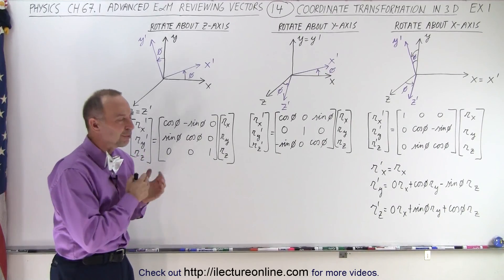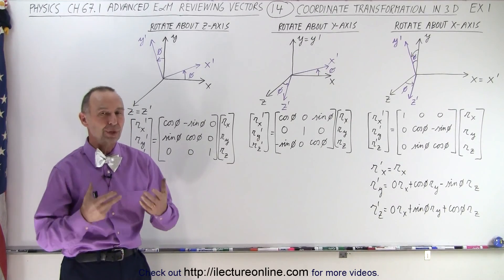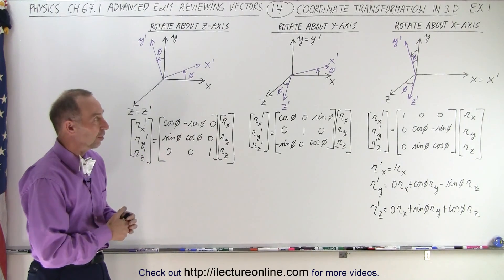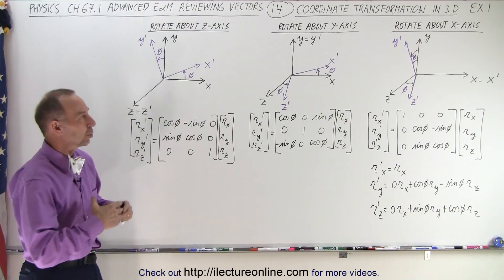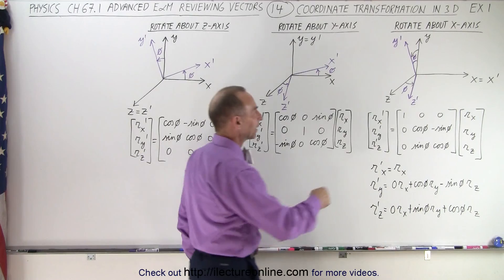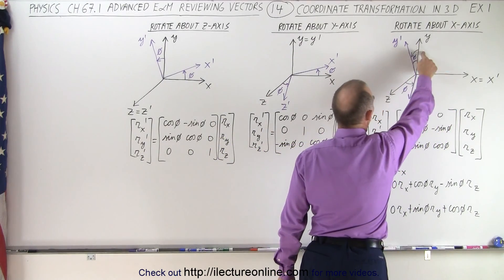Welcome to Electronline. Here before us we have examples of three transformations in the XYZ coordinate system. So the black lines here are the X, the Y and the Z axis.